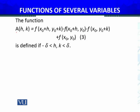Now I define the function A(h, k) = f(x₀+h, y₀+k) − f(x₀+h, y₀) − f(x₀, y₀+k) + f(x₀, y₀). Notice that as h approaches 0, this gives the partial derivative with respect to y evaluated at (x₀+h, y₀), and as k approaches 0, it gives the partial derivative with respect to y at (x₀, y₀). I will use a trick with this definition.